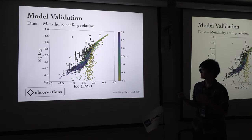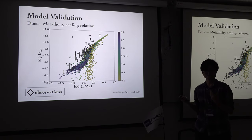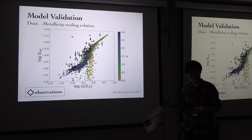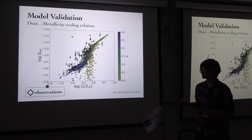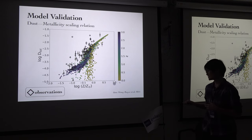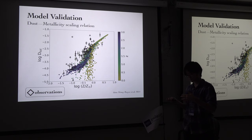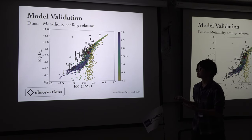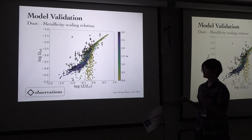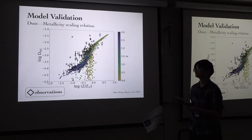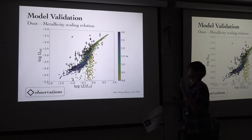First, we validate our model with the dust-to-metallicity scaling relation. On this plot, the x-axis is the gas-phase metallicity and the y-axis is the dust-to-gas ratio for the entire galaxies. The black dots are observations taken from a 2014 paper. We plot all the galaxies along the merger tree at different redshifts, and we can see our galaxies roughly follow the observed dust-to-metallicity scaling relation quite well.